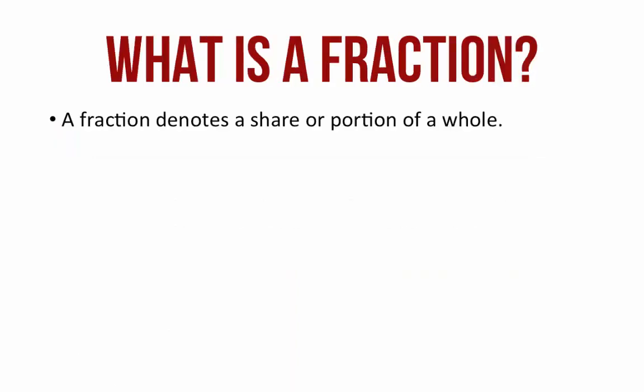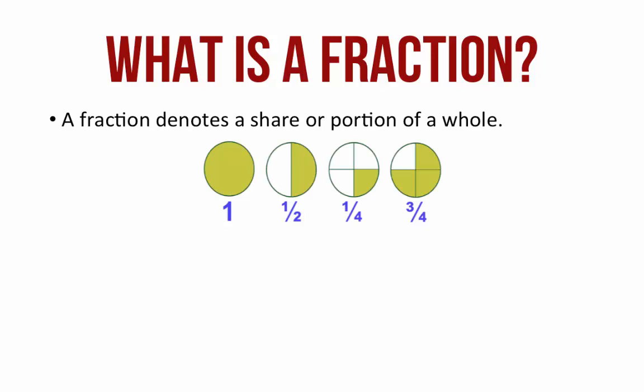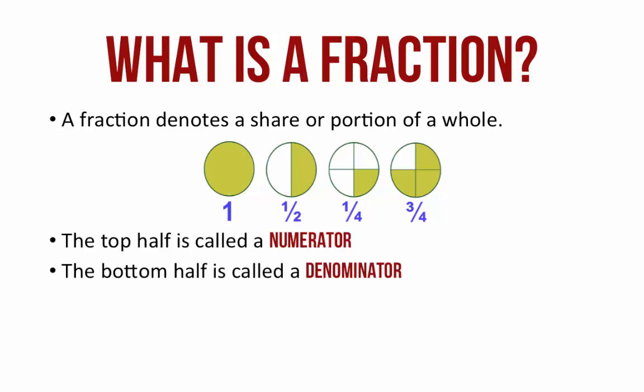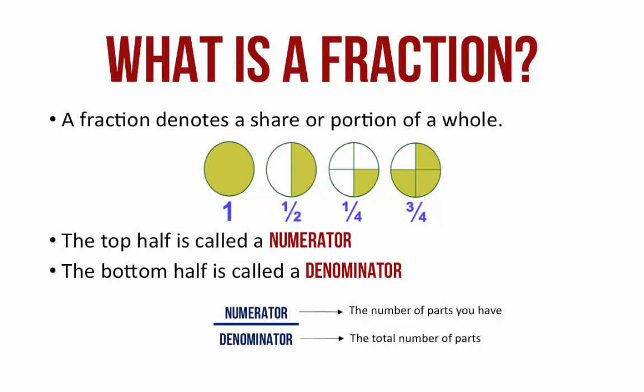What is a fraction? A fraction denotes a share or a portion of a whole. For example, half, one-fourth, three-fourth, etc. The top half is called the numerator and the bottom half is called the denominator. The fraction is represented as the numerator by the denominator. The numerator is the number of parts that you have and the denominator is the total number of parts.